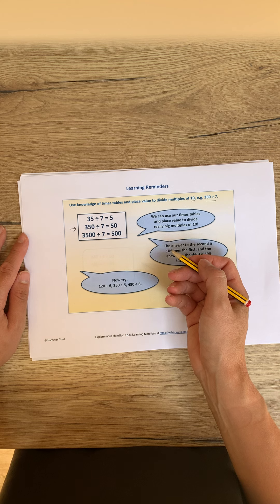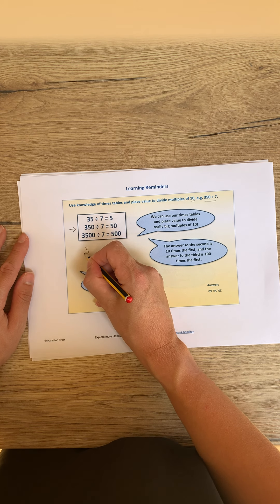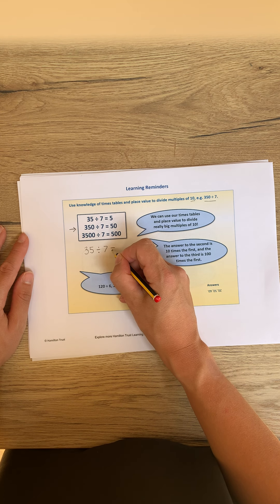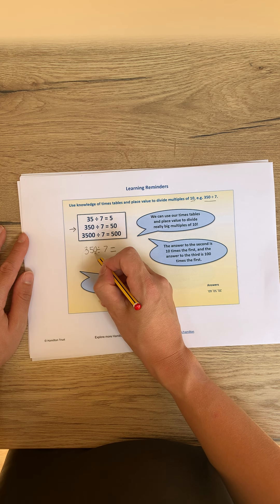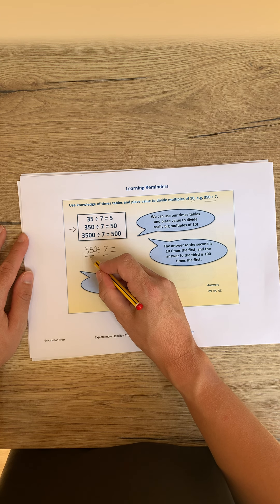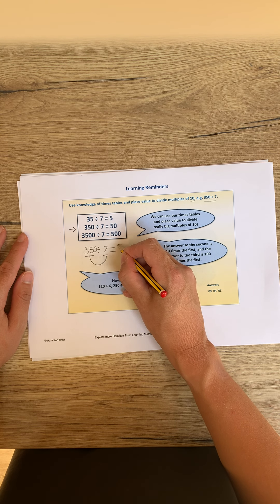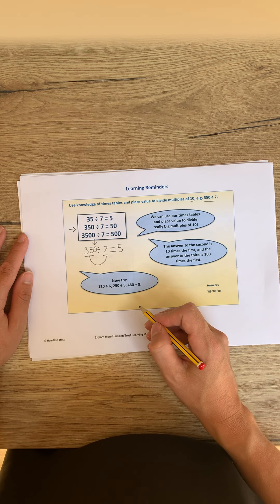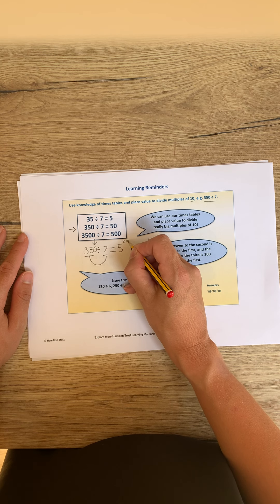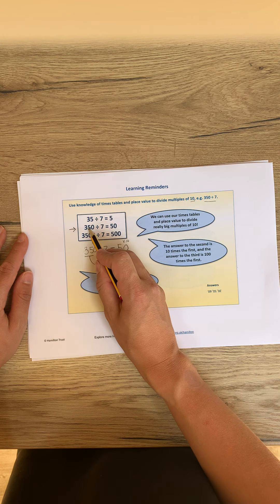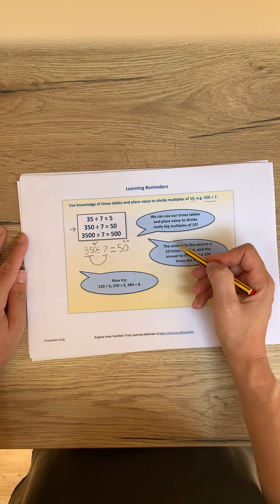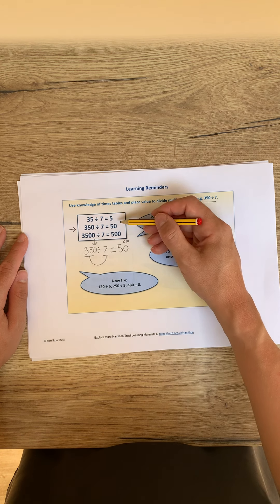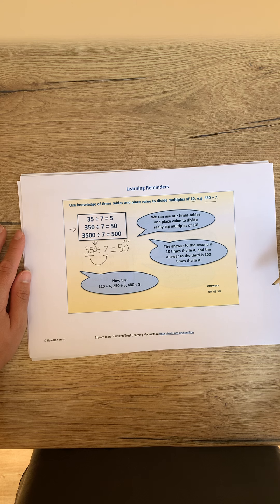The way I can work that out, we can use our smile method. Our smile method is so handy when we're looking at multiplying and also dividing. We know we've got 350 — we're going to underline the important numbers. 35 divided by 7, we can do; we know that that is 5. We've got one place value holder that we haven't used. One place value holder means that we need to multiply our answer by 10, which means our answer is 50. We've used our knowledge of 35 divided by 7 to work out the answer, and as the numbers get bigger, the answers go up in increments of multiplying by 10 as well.